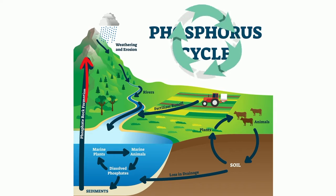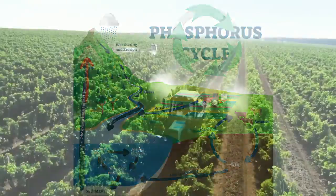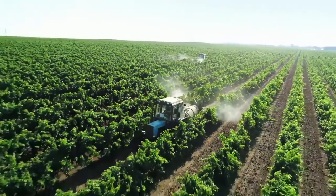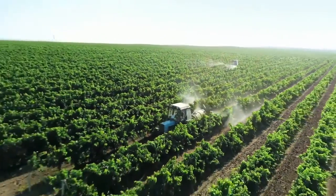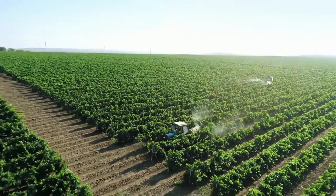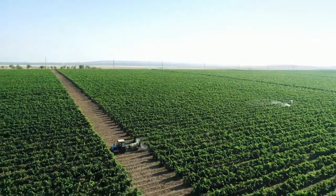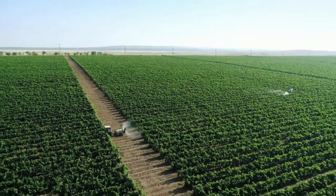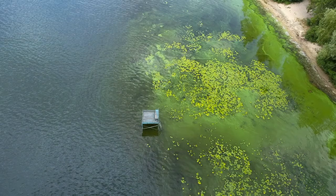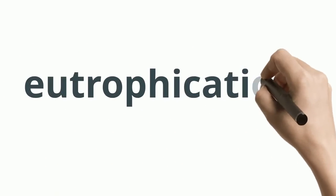However, this process is very slow. Phosphorus can be a limiting factor for an ecosystem. Most fertilizers contain phosphorus, which may be carried to aquatic ecosystems in surface runoff. Fertilizers carried in runoff may cause excessive growth of algae or microbes that were previously limited by phosphorus. This phenomenon is called eutrophication.